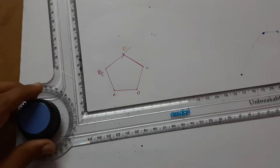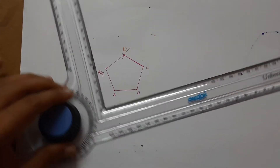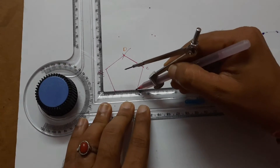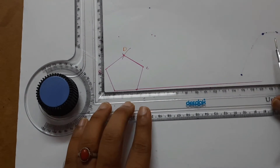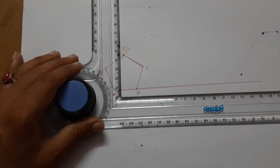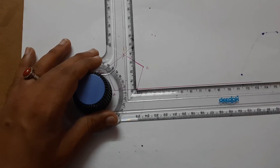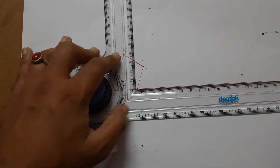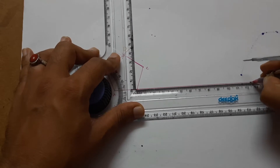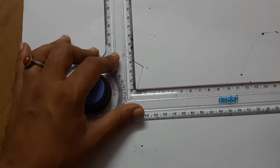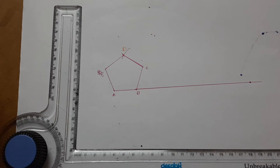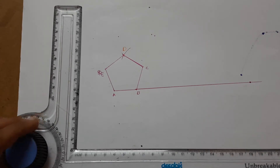So now you have to draw a line. The line length is 25 multiplied by 5, that means 125 mm. The circumference of the pentagon is the side length multiplied by the number of sides — 5 sides of 25 mm each — so you draw 125 mm.